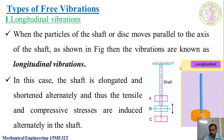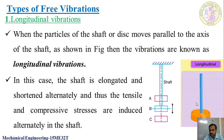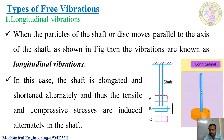In longitudinal vibrations, this disc moves parallel to the axis of the shaft. In longitudinal vibrations, the shaft is shortened and elongated continuously when it is subjected to vibration. Due to this, tensile and compressive stresses are alternatively induced in the shaft — compressive stress and tensile stress alternatively induced on this shaft.